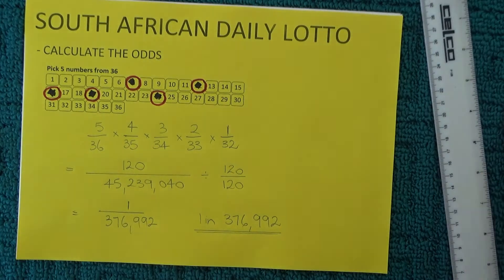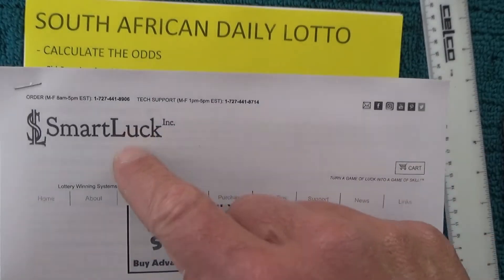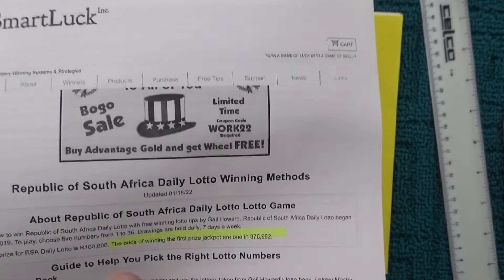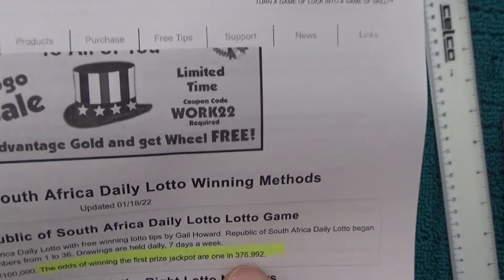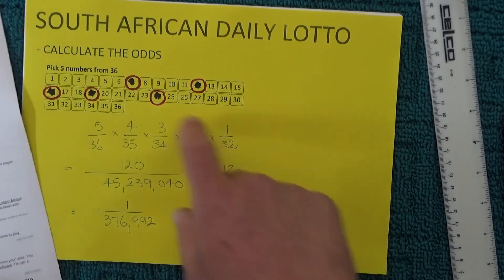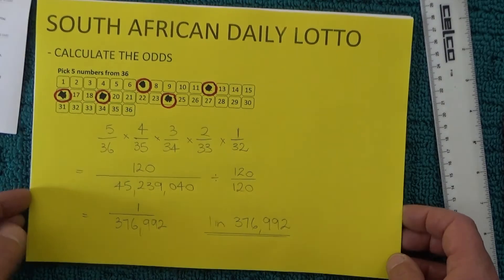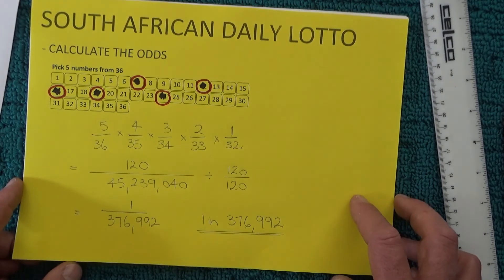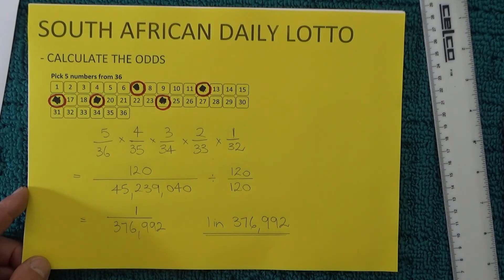To prove that's correct, I've found this page on the internet — the Smart Luck page — which shows the South African Daily Lotto game. It states the odds of winning the first prize jackpot are one in 376,992, which is the same number I've calculated. So there we go — those are the odds of winning first prize in South African Daily Lotto. I hope you've enjoyed this video, thanks for watching, goodbye for now.